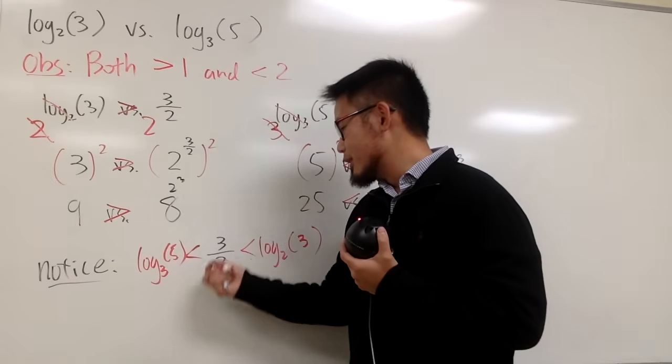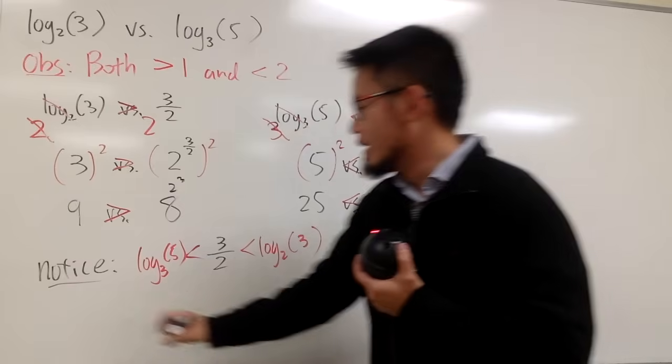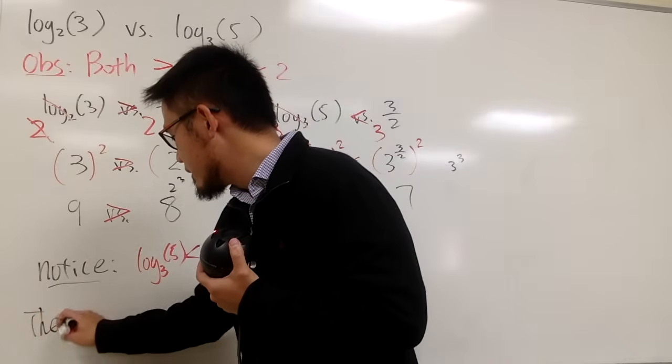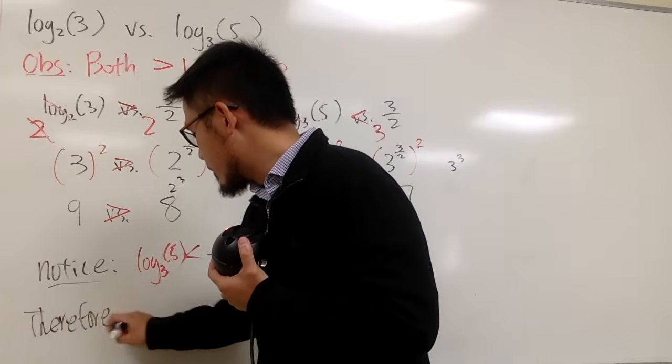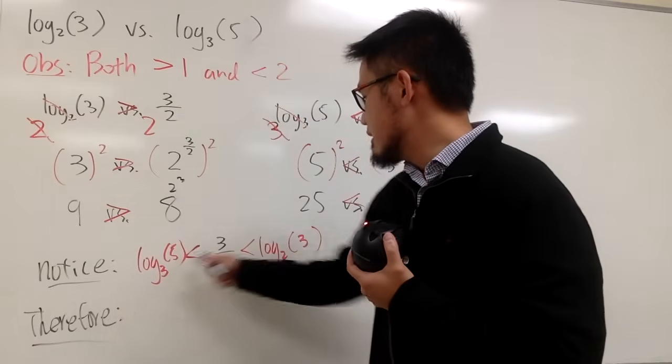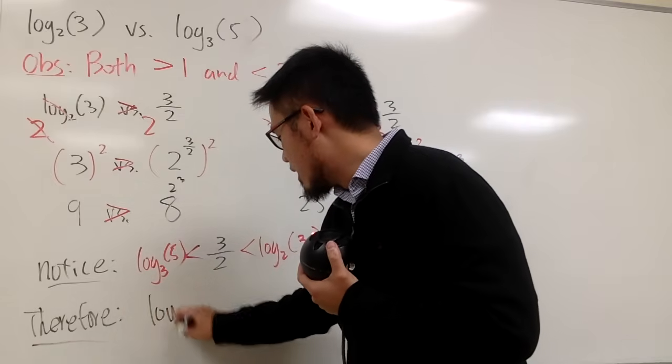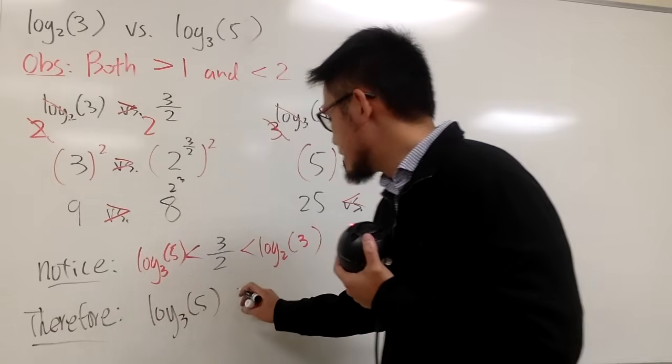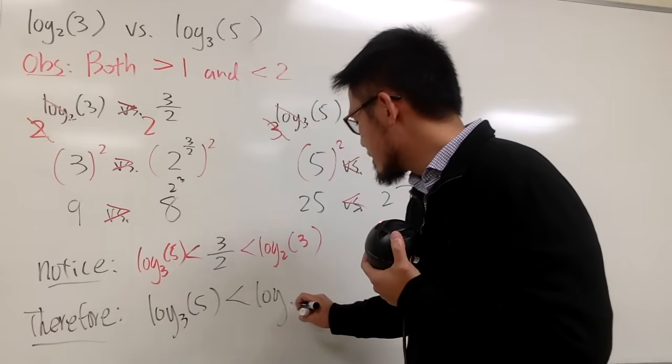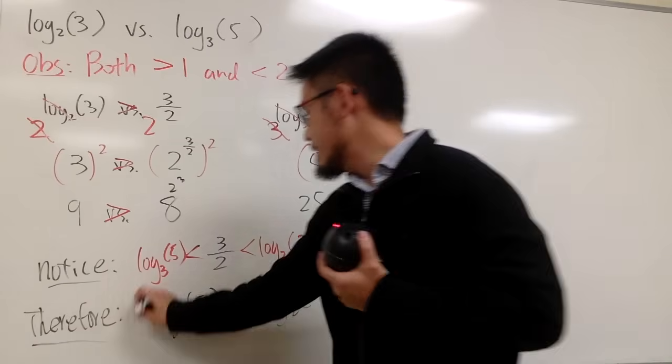And, of course, 3 over 2 is in the middle. I don't need to write down 3 over 2. So, therefore, I can conclude that this is smaller than that. So, log base 3 of 5 is less than log base 2 of 3.